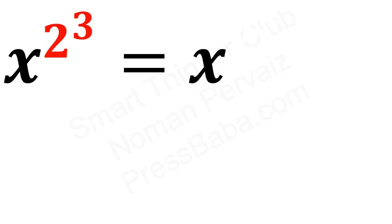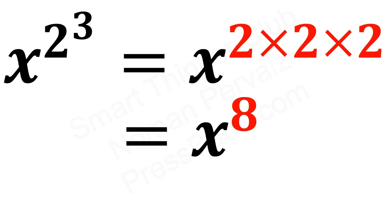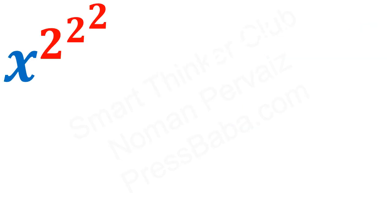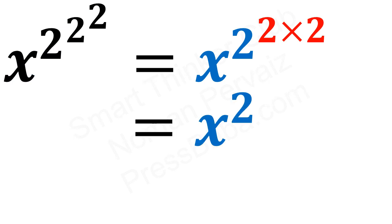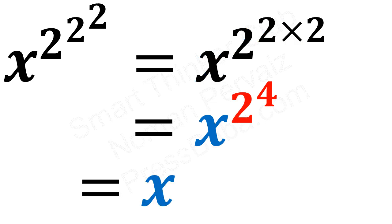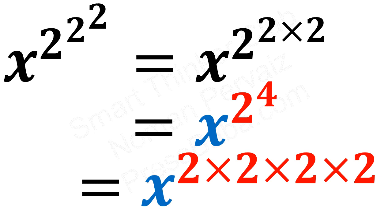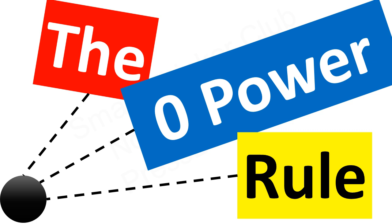Consider another type of example: x raised to the power 2, and 2 raised to the power 3. We take x as it is — 2 raised to the power 3 means multiply 2 three times, which becomes 8 — so we get x raised to the power 8. Consider another example with x raised to the power 2, then 2 raised to the power 2, and again 2 raised to the power 2. Taking x raised to the power 2 as it is, and expanding gives 2 multiplied by 2 equals 4, then 2 raised to the power 4 means 2 is 4 times, making 16. So the result becomes 16.